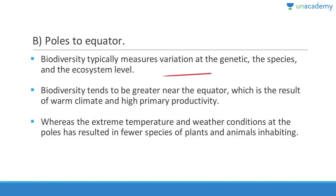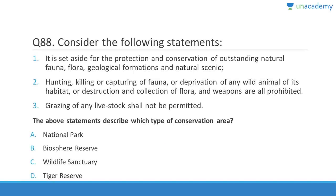Biodiversity typically measures variation at the genetic, species, and ecosystem level, and tends to be greatest near the equator and at sea level. As you go north or south from the equator, biodiversity decreases; as you go up in altitude, it also decreases. Extreme temperature and weather conditions at the poles result in few species of plants and animals. Question 88 describes a protected area where hunting, killing, capturing of fauna, deprivation of wildlife habitat, destruction, and weapons are all prohibited, and grazing of livestock is not permitted. This is the typical definition of a national park.